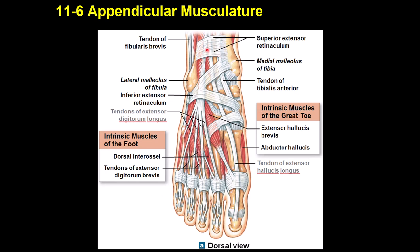The extensor retinaculum has a superior and inferior portion. Extensor hallucis brevis causes extension of the big toe; extensor hallucis longus comes from the leg. Extensor digitorum longus goes to the four toes, and extensor digitorum brevis is a shorter version in the foot. Dorsal interossei muscles lie between the bones.